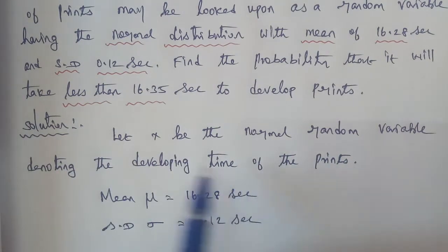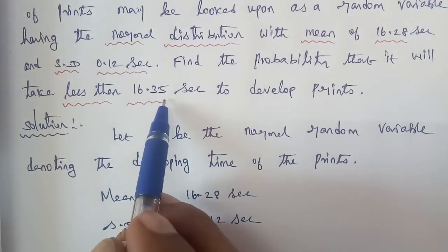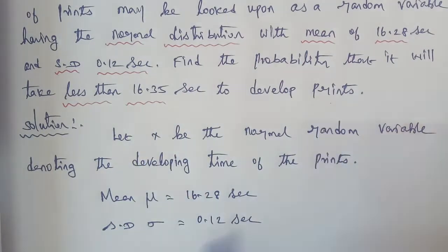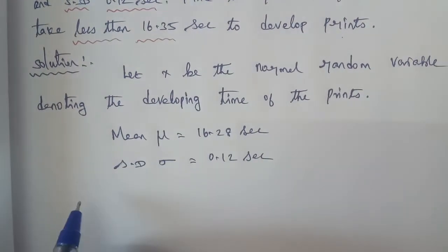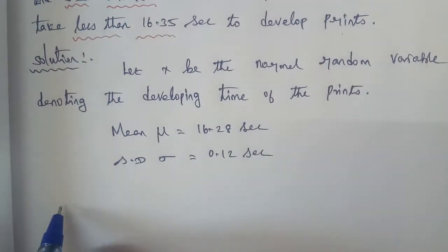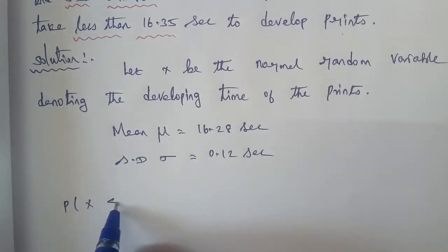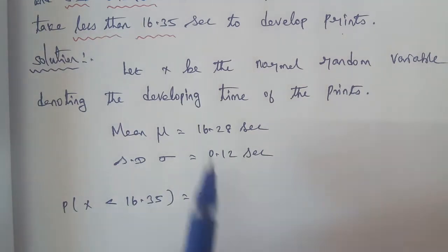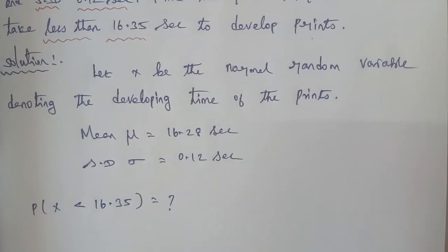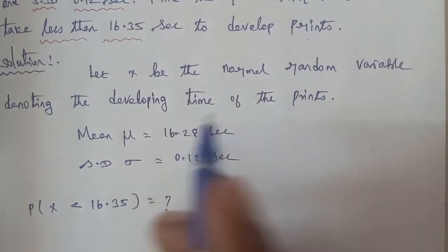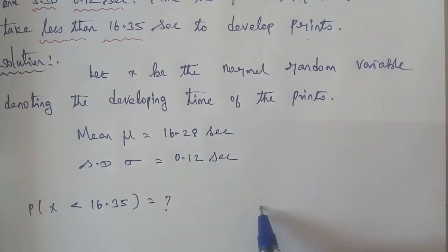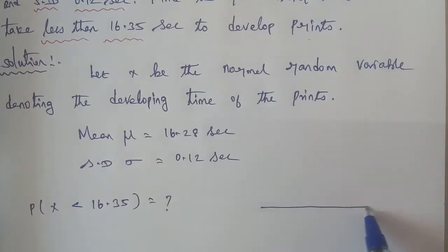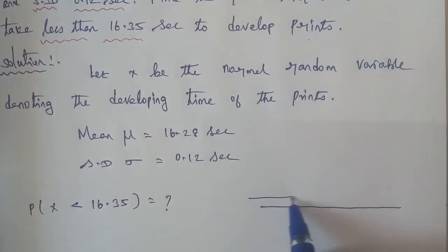From the question, we need to find the probability that the developing time is less than 16.35 seconds. Therefore, we need to find P(X < 16.35). The normal distribution follows a bell shape curve.